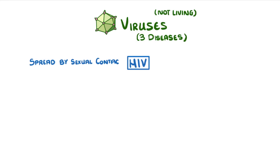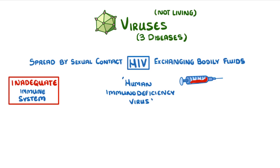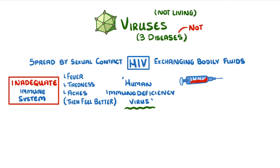HIV, on the other hand, can be spread by sexual contact such as unprotected sex, or by exchanging bodily fluids such as blood — for example when people share needles. HIV stands for human immunodeficiency virus, which tells us it affects humans and causes a deficient or inadequate immune system. When somebody first catches HIV they might get flu-like symptoms for a few weeks — fever, tiredness, and aches — but then they'll start to feel better and think that everything's fine.